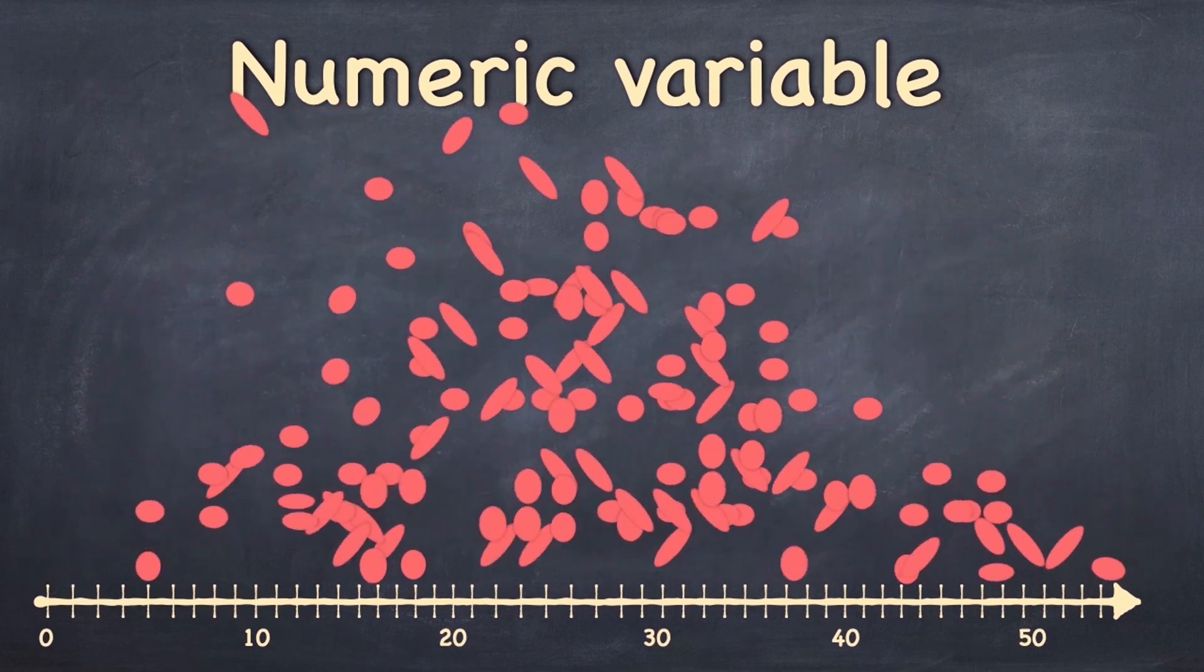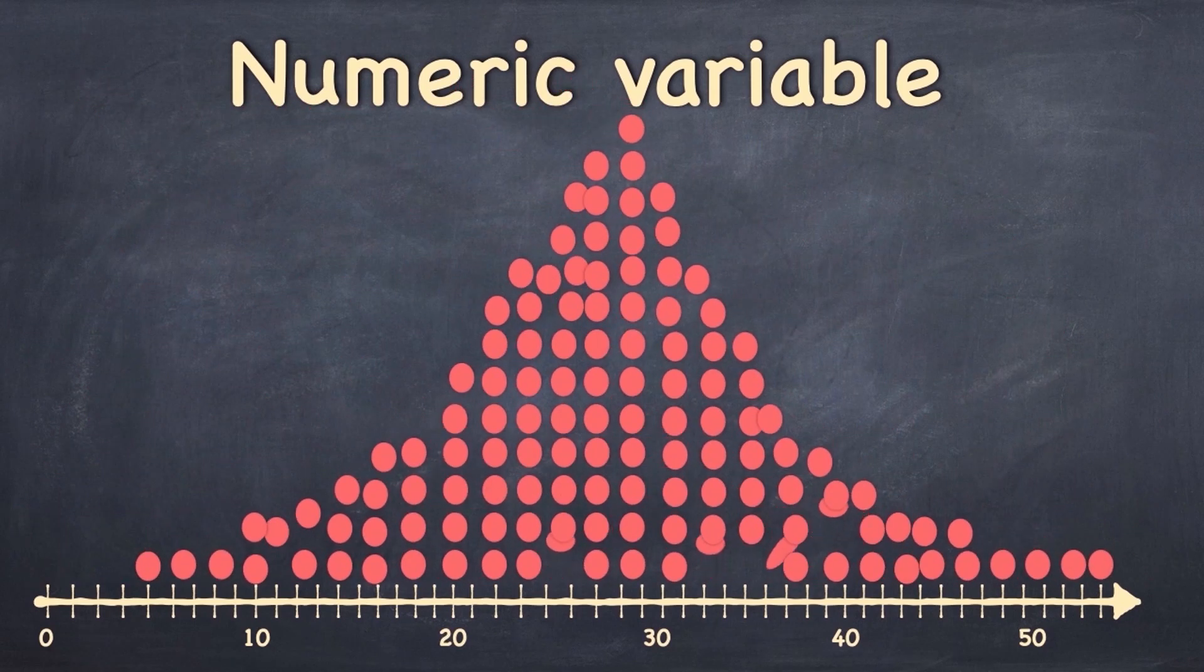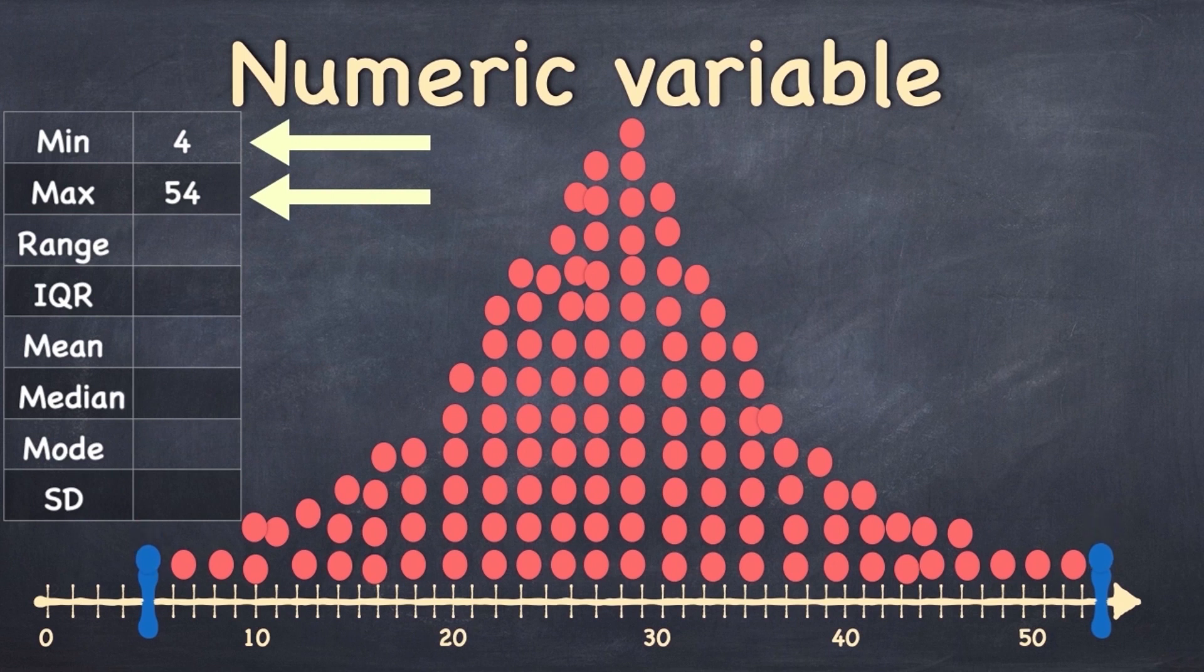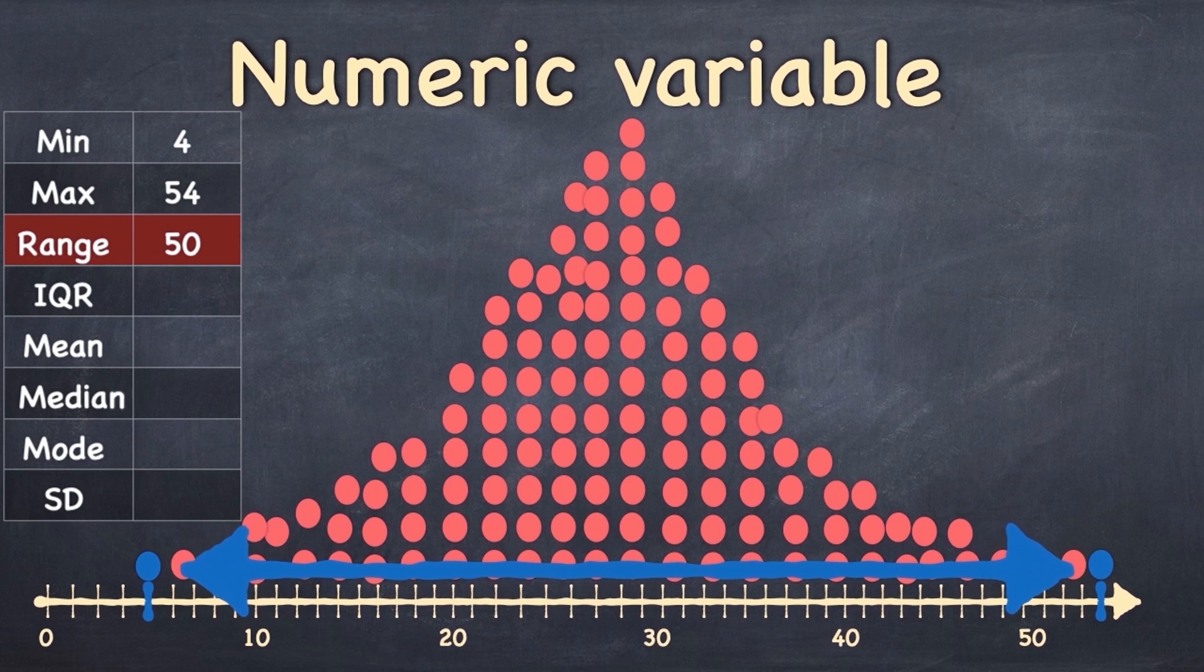So here we've got a data set, and I've shown the distribution of the numeric variables by representing each observation as a ball. Let's take a look at the most useful ways that we can describe this data. Firstly, the minimum and the maximum values, and these also happen to be the parameters for the range. And the range tells us a little bit about the distribution or the spread of the data.